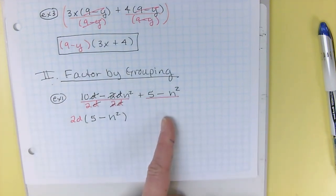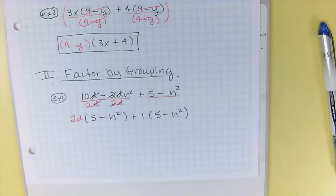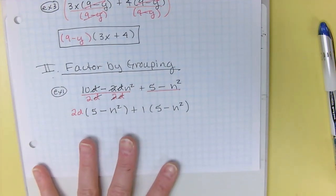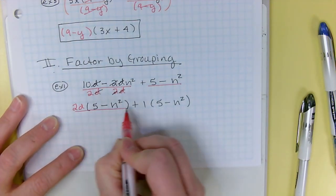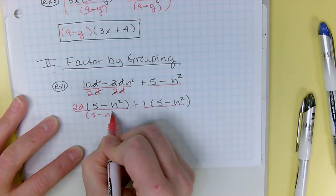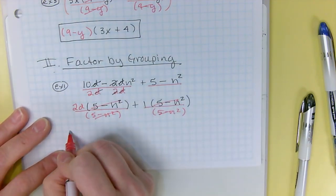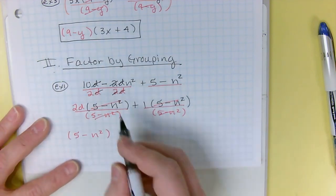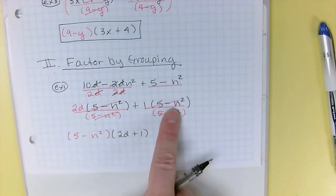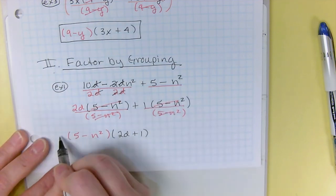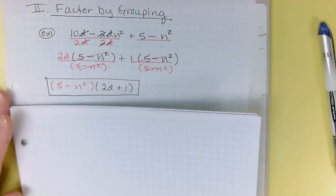Now in this pair, they don't have anything in common. So it's just like taking a 1 out. So you just put in a 1 placeholder because they don't have anything in common. Okay, so now they both have a 5 minus n squared. So we're going to divide both of them by 5 minus n squared. The 5 minus n squared goes to the front, and I'm left with 2d plus 1. And the 1 is because the 5 minus n squared divided into itself one time. All right, let's do another one. Example 2.